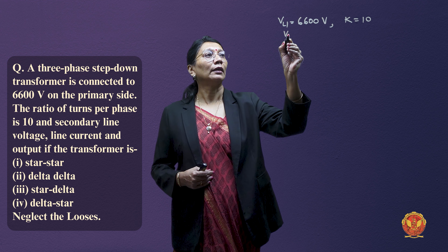Now we start the first connection, which is star-star. When both primary and secondary windings are star-connected, the line current equals the phase current and the line voltage equals √3 times the phase voltage on both sides. Since primary line voltage is given as 6600 V, the primary phase voltage is 6600 ÷ √3 = 3810.15 volts.